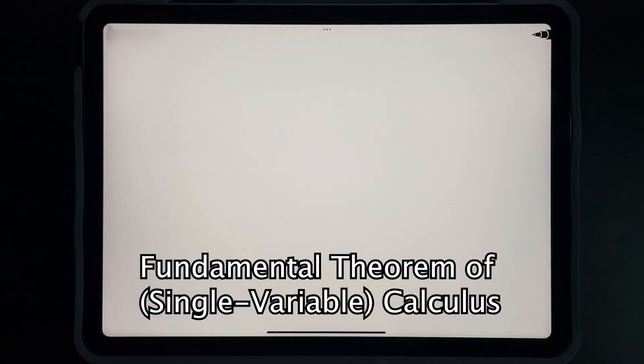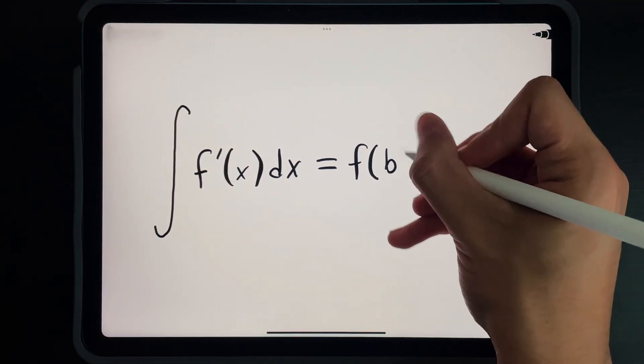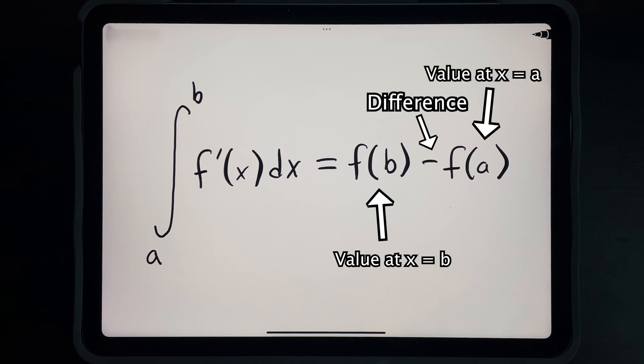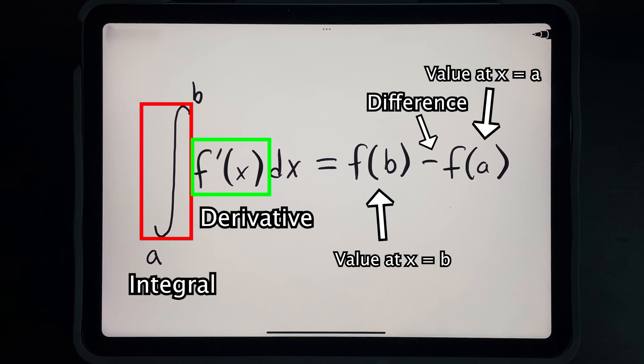Let's start with the fundamental theorem of single variable calculus. The formula for this theorem can be written like so. What this is saying is that the difference between the value of a function f at x equals b and its value at x equals a is equal to the integral of its derivative from the bounds x equals a to x equals b.